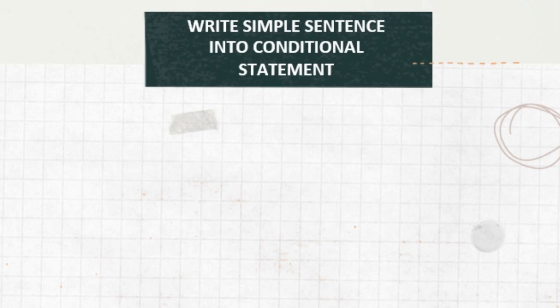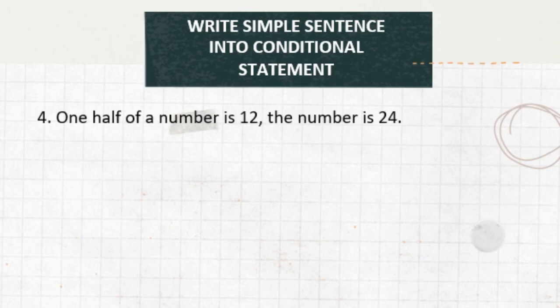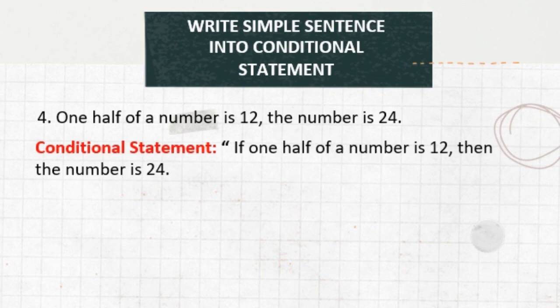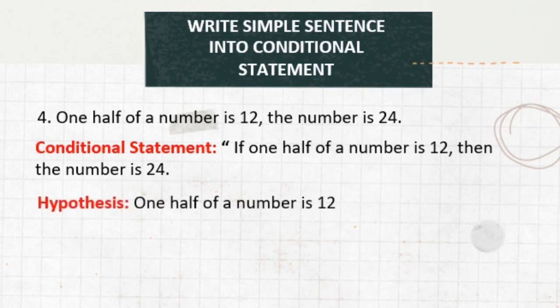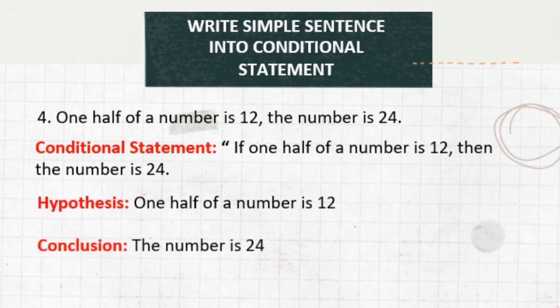Now, your turn. One-half of a number is 12. The number is 24. What is the conditional statement, hypothesis, and conclusion? The conditional statement: if one-half of a number is 12, then the number is 24. The hypothesis is the if-part: one-half of a number is 12. The conclusion is the then-part: the number is 24.